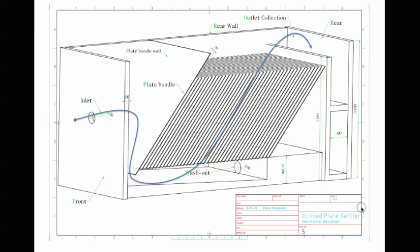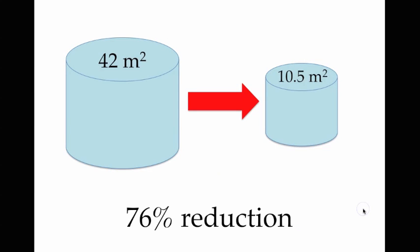I chose the flow rate entering my design to be 4 litres per second, and therefore my total cross-sectional area is equal to 5.1 metres squared. If I include the inlet and outlet areas, it becomes a total of 10.5 metres squared. And that's a reduction of approximately 76% from the original design, which needs an area of about 42 metres squared to treat the same inlet flow.